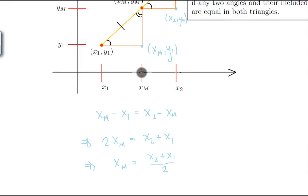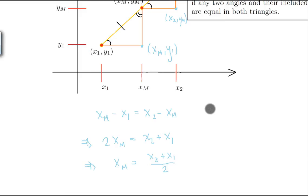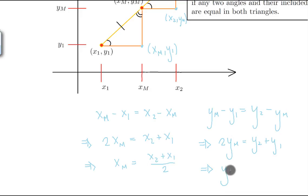Now let's do the same for y. Since these triangles are congruent, the distance from ym to y1 is equal to the distance from y2 to ym. So we write: ym minus y1 equals y2 minus ym. Doing the same algebraic manipulation, we have that 2ym equals y2 plus y1, which implies that ym equals y2 plus y1 divided by 2, and hence the proof.